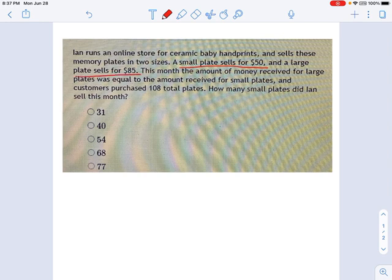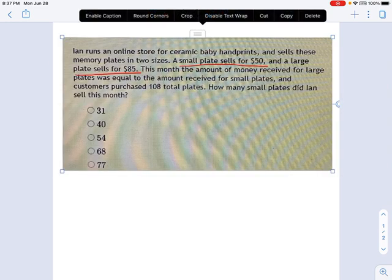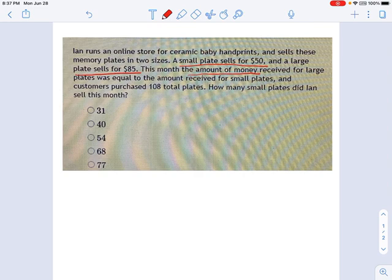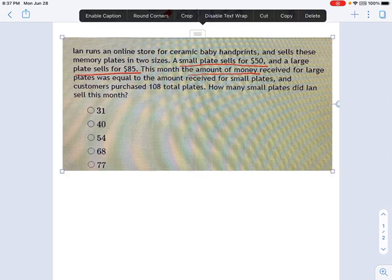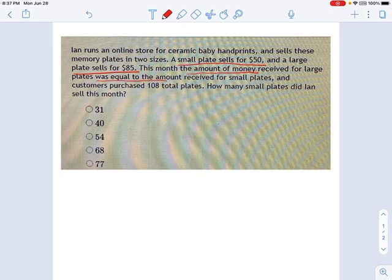So they're going to give us some clues here. One of the clues is that the amount of money received for large plates was equal to the amount received for small plates. So let's try to put that into an equation.